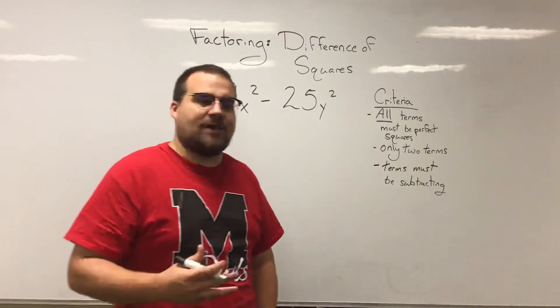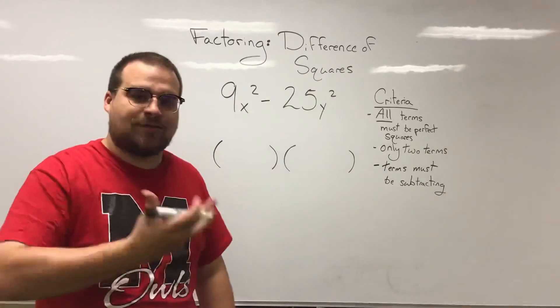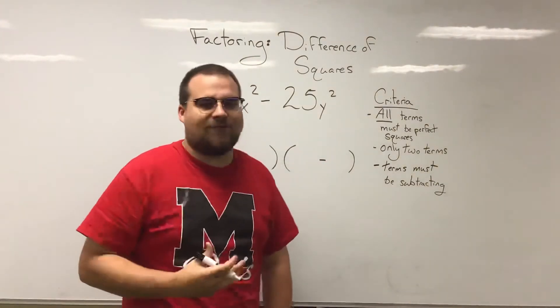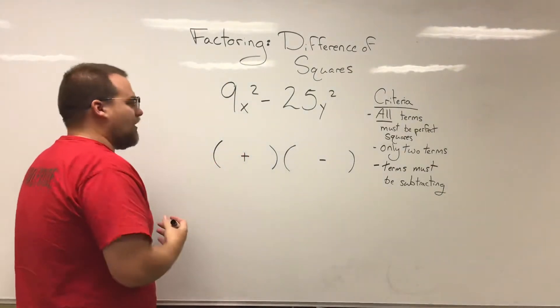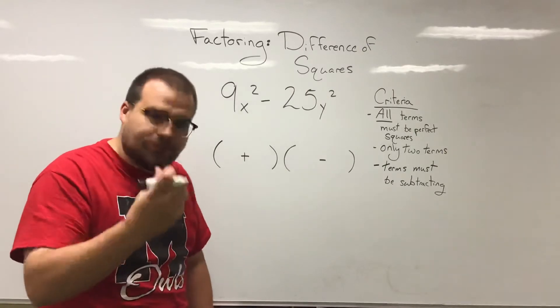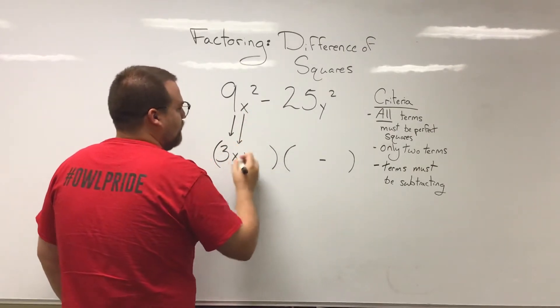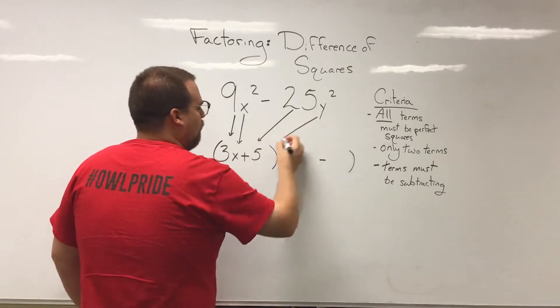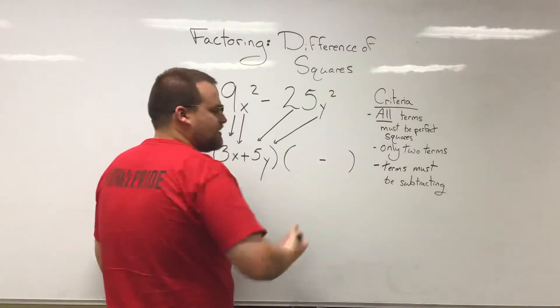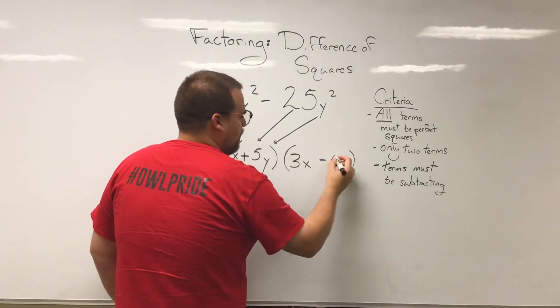So what I'm going to do is go ahead and write my binomials. And we established the fact earlier that one of them is always going to be adding, the other one's always going to be subtracting. So I'm going to go ahead and just write that in right at the start. And then I'm just going to find my square roots of every term and put them in the same place that their squared version started. So 9, its square root is 3, x squared, its square root is x, 25 is 5, and y squared becomes y. The exact same thing is going to be what I write in this second one, with the only difference being that minus sign. So 3x and 5y.